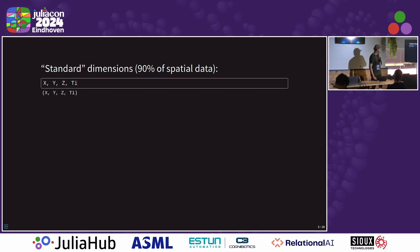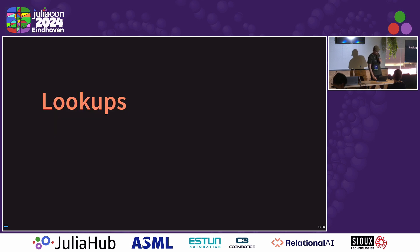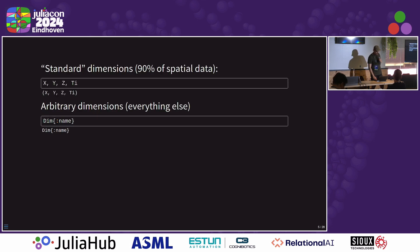We've defined a bunch of standard dimensions — X, Y, Z, and Time — because we can't really use the name 'time' or 'T'. And this standardizes spatial data. But we also have just generic dimensions where you can name your dimensions anything you want. But they're all subtypes of dimension.